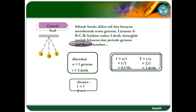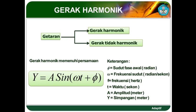Ini adalah materi awal tentang getaran. Dalam getaran fisika dikenal dengan namanya gerak harmonik atau getaran harmonik atau gerak tidak harmonik. Gerak harmonik adalah gerak yang dianggap terus-menerus berulang. Dalam jangka waktu yang lama, gerakannya tetap — itu namanya gerak harmonik. Dalam gerak harmonik sederhana, persamaannya adalah Y = A sin(ωt + θ), di mana Y adalah simpangan, A adalah amplitudo, T adalah waktu, ω adalah frekuensi sudut, dan θ adalah sudut awal dari getaran itu sendiri.